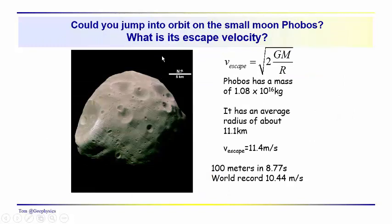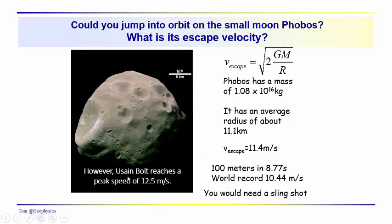Okay, off on another tangent, I suppose, but we did talk about Phobos. And this is the crater Stickney. And we mentioned what the escape velocity was for 67P. In the case of Phobos, using its mass and assuming an average radius of about 11 kilometers, we get an escape velocity of 11.4 meters per second. One can run the world record 100 meters in 8.77 seconds, 10.44 meters per second. So not quite good enough to get you off. However, a slingshot would definitely help. And Usain Bolt reaches a peak speed of 12.5 meters per second. So if he could get to that peak speed, he would certainly launch himself into orbit.